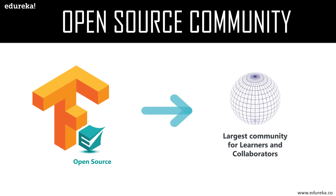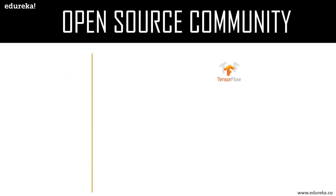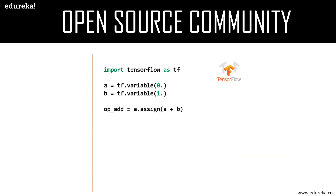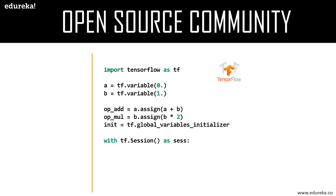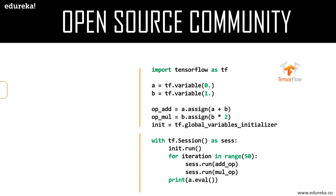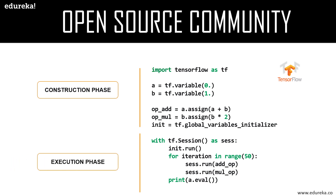The key advantage that gives TensorFlow an edge over competitors is that it is open source and has huge community support, providing researchers a way to build new models and a platform to interact with others facing similar issues. Any TensorFlow program basically consists of a construction phase and an execution phase. The construction phase is where you build a graph; the execution phase is where you evaluate the graph, create a session, and initialize all the variables, as shown in the example of geometric sequencing.